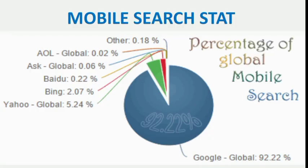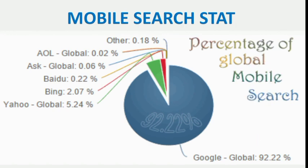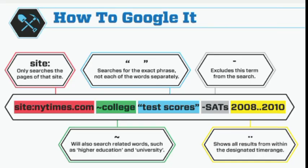Now, looking at mobile search statistics — those who search on Google with a mobile device globally account for 92.22%. So Google has the largest share online, both for general searches and for mobile searches. It is very certain that you must learn how to write your articles or design your website in a way that is mobile-friendly and accepted by Google. If you want people to search for your page and find you, you must follow the rules when it comes to Google and mobile browsers.